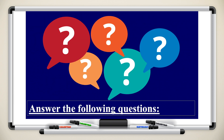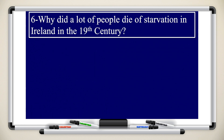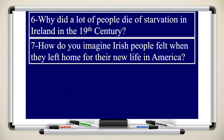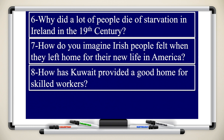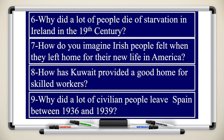After the multiple choice questions, you have the productive questions. Question number six: why did a lot of people die of starvation in Ireland in the 19th century? Question seven: how do you imagine Irish people felt when they left home for their new life in America? Question eight: how has Kuwait provided a good home for skilled workers? Question number nine: why did a lot of civilian people leave Spain between 1936 and 1939?